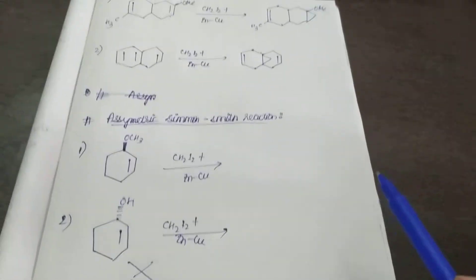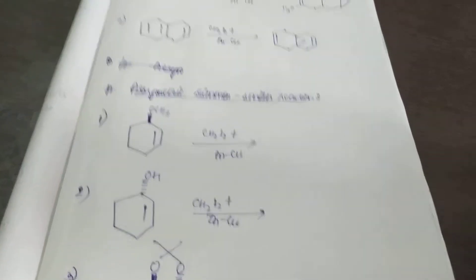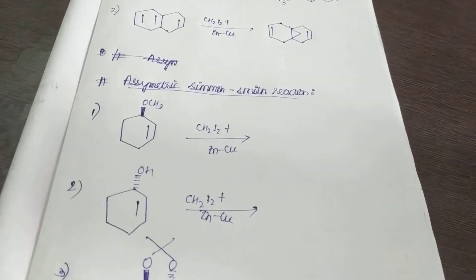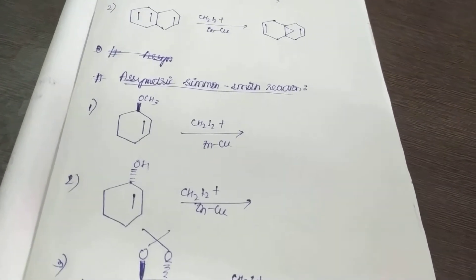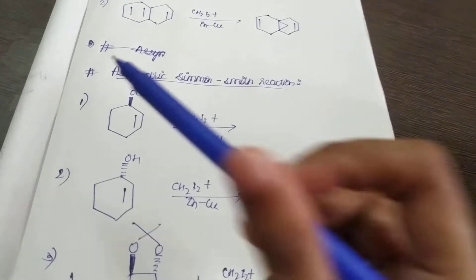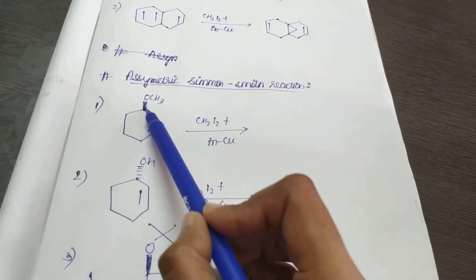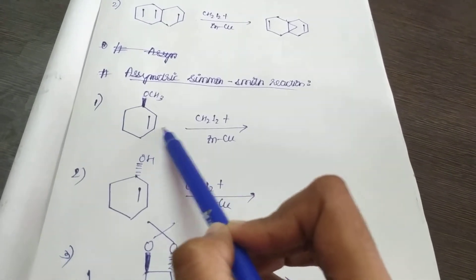this asymmetric Simmons-Smith reaction - what does it mean? Whenever there is a polar group, ring formation will take place on the same side of that polar group. The stereochemistry will be like that of that polar group. Suppose here you see the stereochemistry is above the plane, right? So this cyclopropane ring will form definitely,